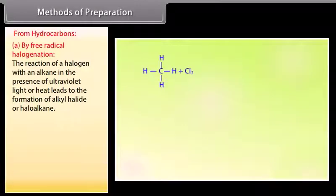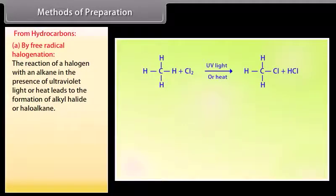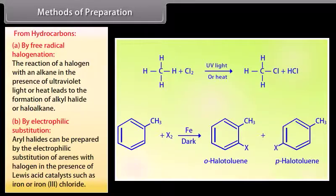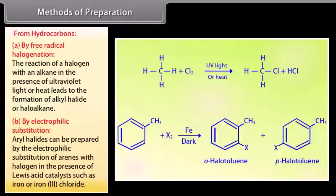By free radical halogenation: the reaction of a halogen with an alkane in the presence of ultraviolet light or heat leads to the formation of alkyl halide or haloalkane. By electrophilic substitution: aryl halides can be prepared by the electrophilic substitution of arenes with halogen in the presence of Lewis acid catalysts such as iron or iron(III) chloride.